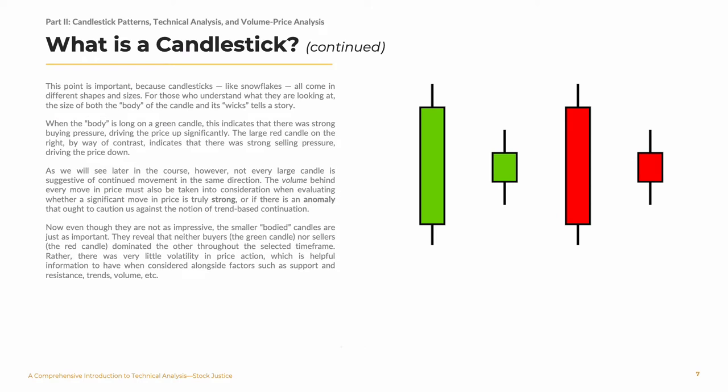This point is important because candlesticks, like snowflakes, all come in different shapes and sizes. For those who understand what they're looking at, the size of both the body of the candle and its wicks tells us this story. When the body is long on a green candle, this indicates that there was strong buying pressure, driving the price up significantly. The large red candle on the right, by way of contrast, indicates that there was strong selling pressure, driving the price down. As we will see later in the course, however, not every large candle is suggestive of continued movement in the same direction.